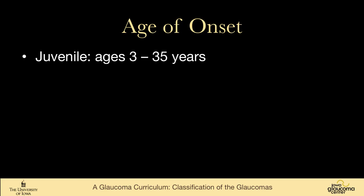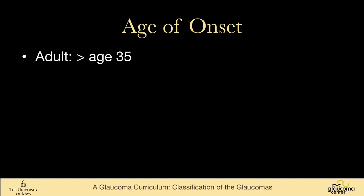Juvenile glaucoma is from three to 35 or 40 years — it varies from source to source. Adult glaucoma is over age 35, and juvenile is uncommon because it's rare for someone to have glaucoma in that age range.